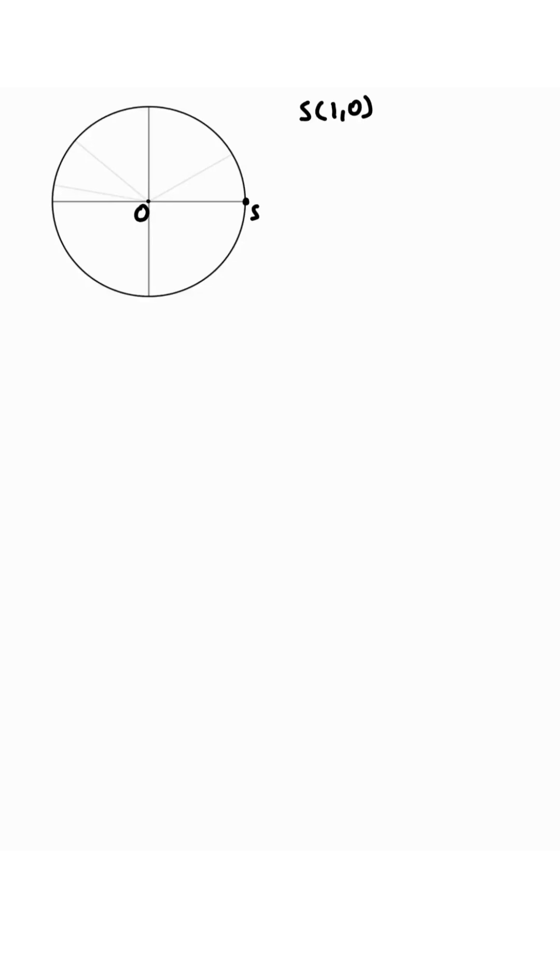Suppose we have the unit circle with S to be at (1,0), the origin is (0,0). We'll draw alpha, label this point P. We'll draw beta, label this point Q. Then alpha minus beta is this angle, and we'll label this point R.